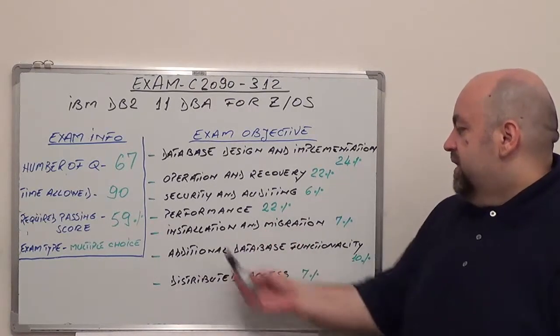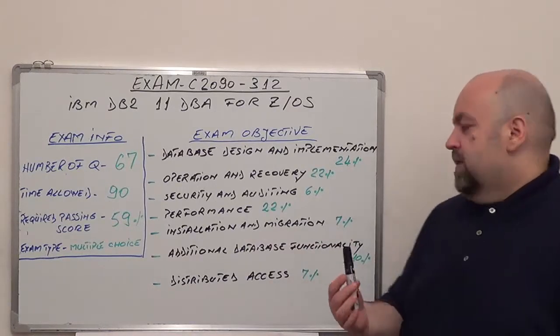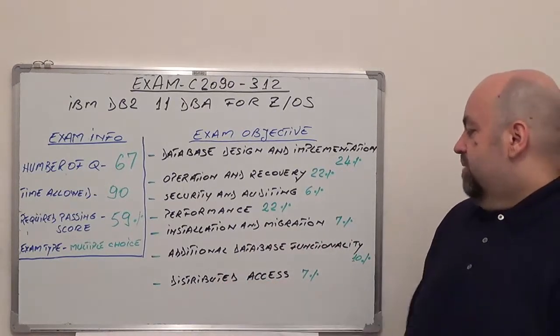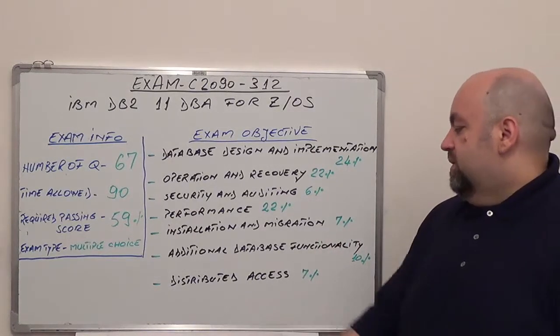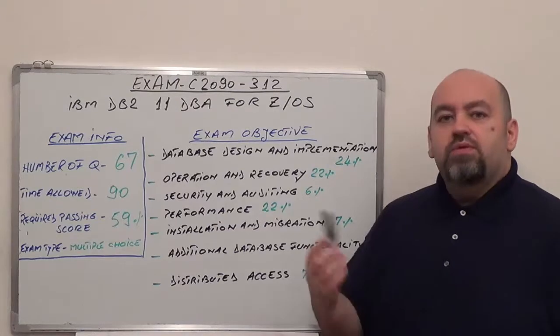The fifth one is installation and migration, 7% of total questions. Next is additional database functionality, with 10% of total questions. And the last one is distributed access, with 7% of total questions.